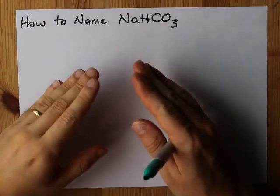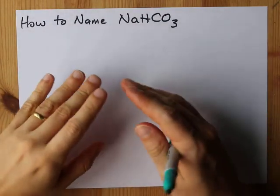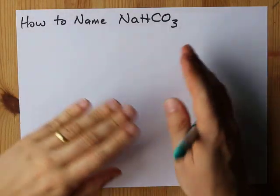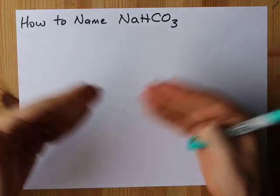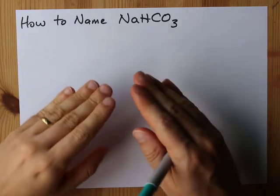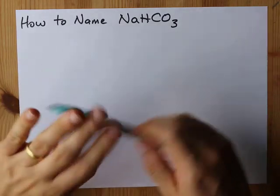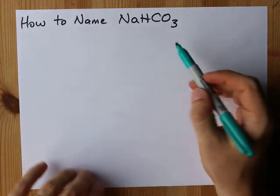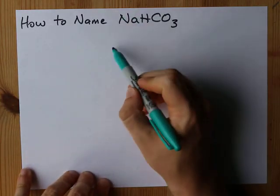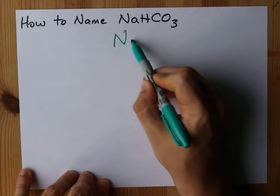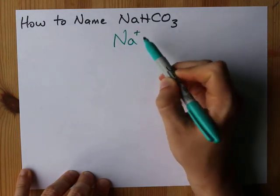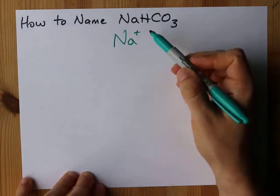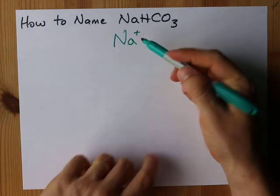Your job when naming ionic compounds is to determine what the positive and negative ions that make up the compound were. In this case, the metal was Na, and the ion that it makes is Na⁺¹.